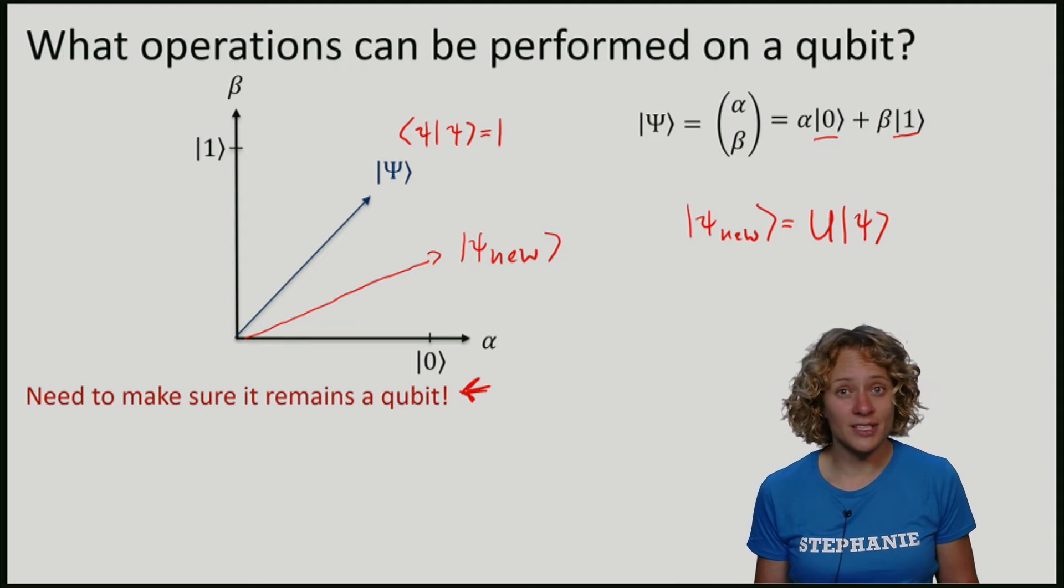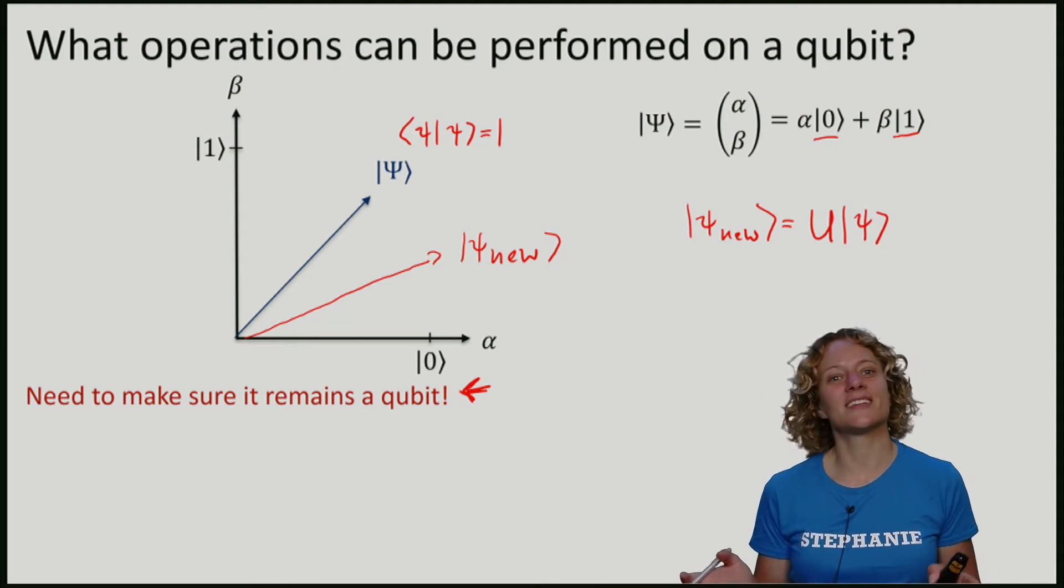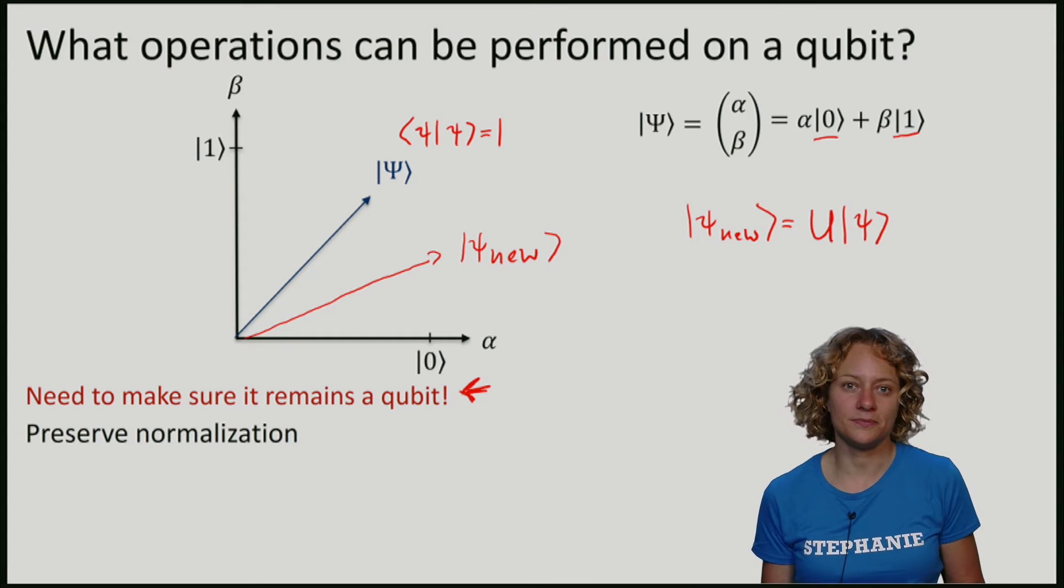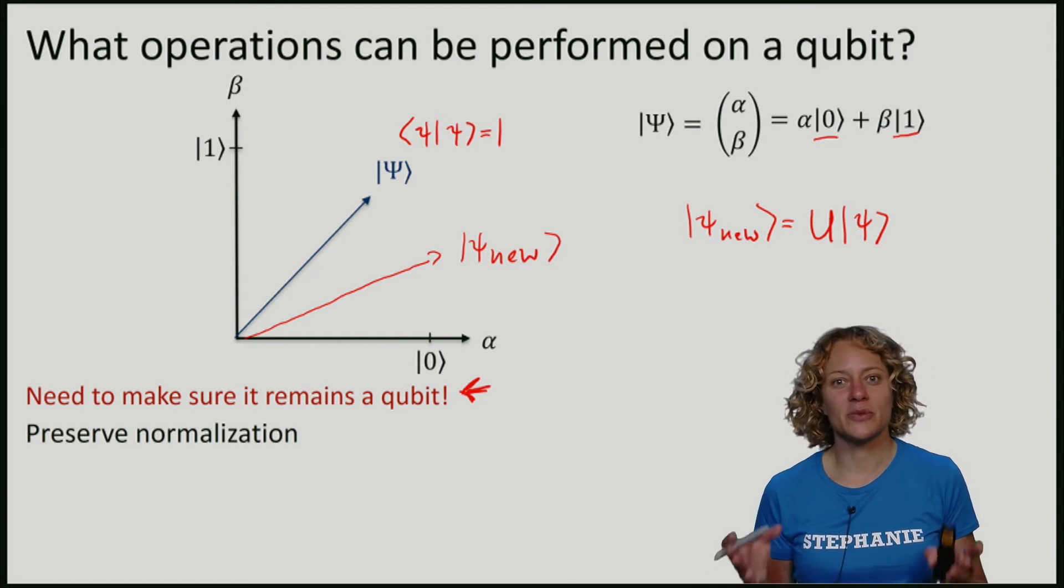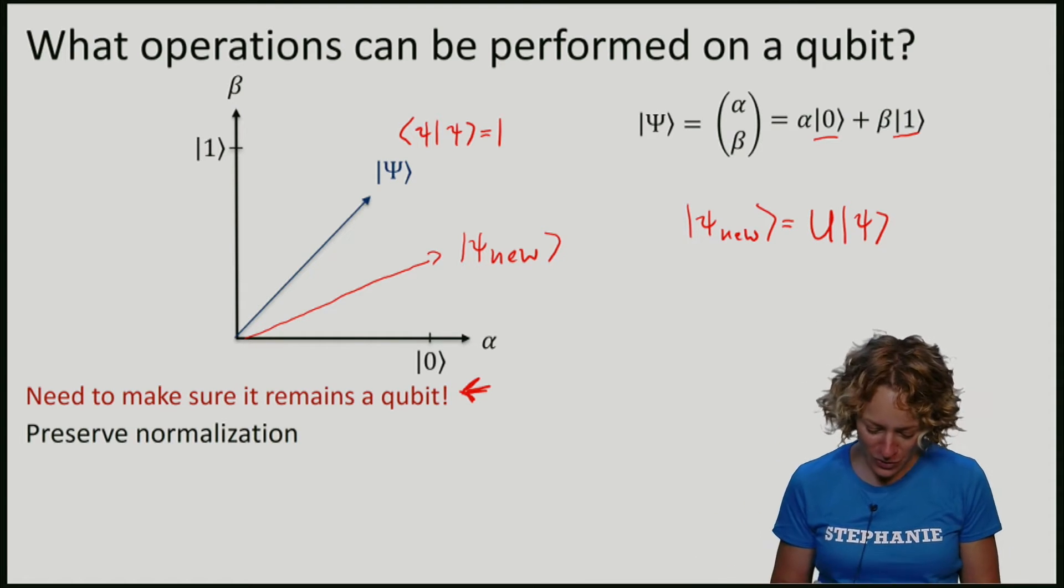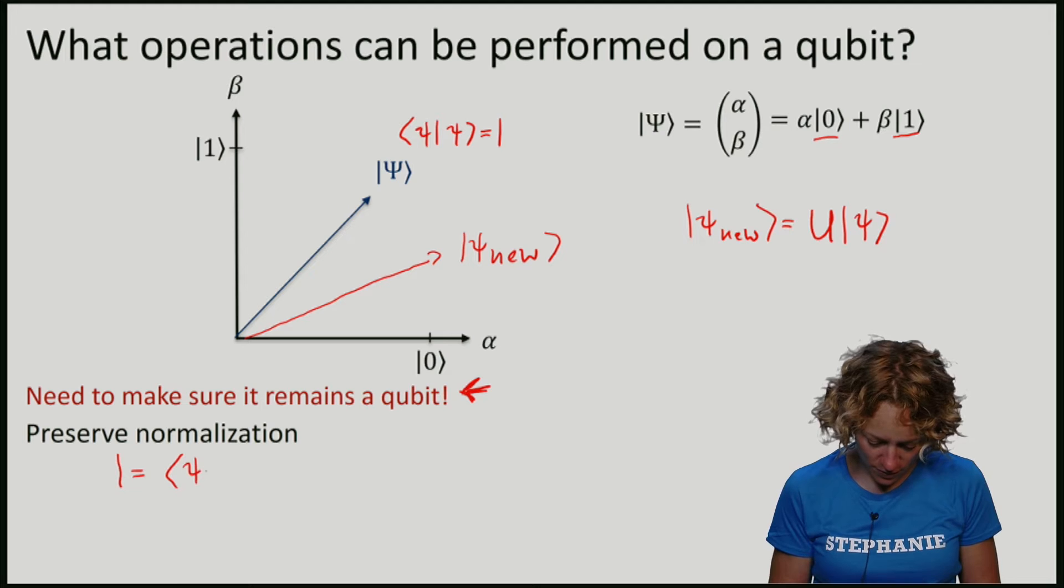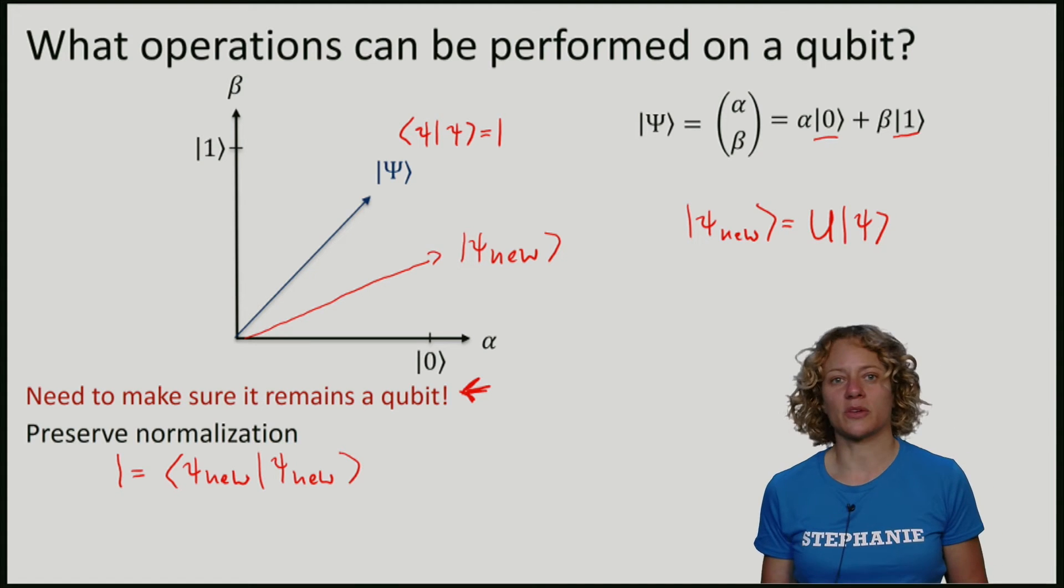So we need to make sure that it remains a qubit. We've also seen that this is quite important because it tells us that the sum of the probabilities, if we are going to measure this qubit, is going to be 1. So we certainly want that also for our new qubit, the inner product is 1.